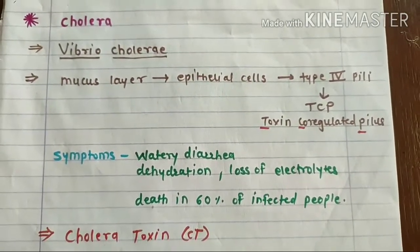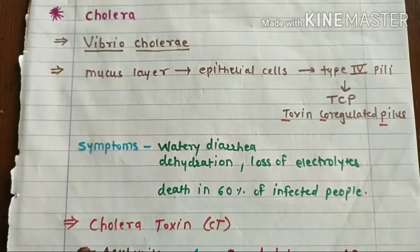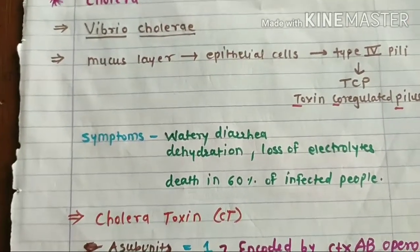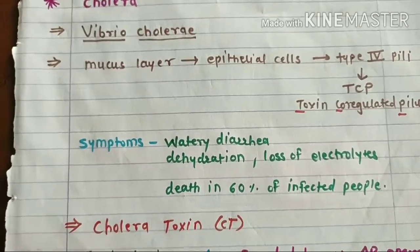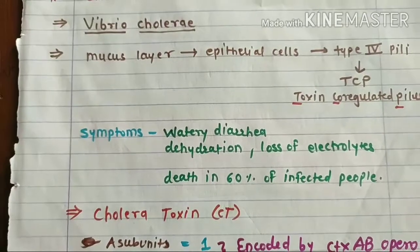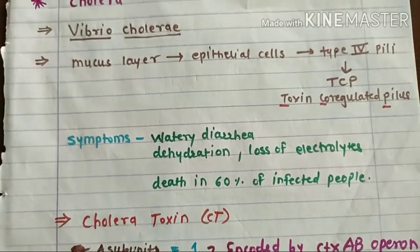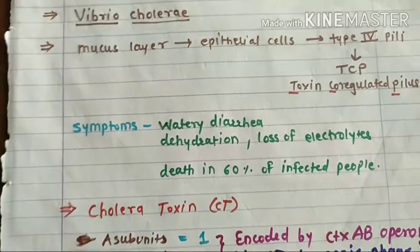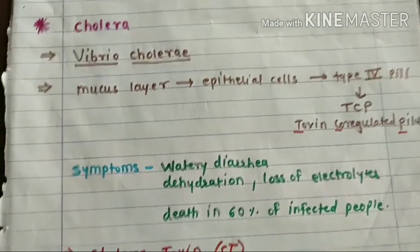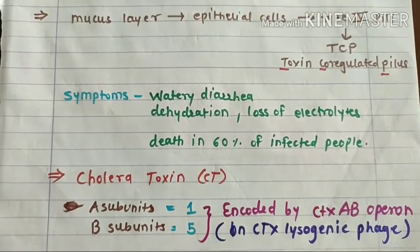Upon establishing itself on the epithelial cell, it colonizes. After a particular number of organisms is reached, it results in different symptoms such as watery diarrhea. There is a loss of 10 to 20 liters of fluid from the body, severe dehydration because of water loss, and loss of electrolytes. Because of loss of electrolytes and dehydration, the death rate of cholera is very high — 60% of infected people can die of Vibrio cholerae. What causes this watery diarrhea is the toxin produced by Vibrio cholerae.